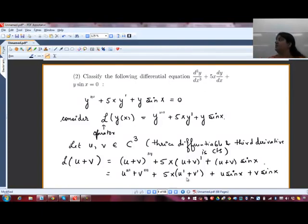I can further simplify the middle term here as well, just distribute 5x to both terms. So I will get 5xu', 5xv', u sin x, v sin x. This is just a simplification of this expression. Sum of two function derivatives, we can take it as a derivative of each function and then add it together.